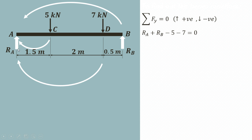RA and RB are acting in the upward direction so they are positive, whereas the 5 kN and 7 kN forces are acting in the downward direction so they are negative. Transferring the minus 5 and minus 7 to the other side they become positive, so 5 plus 7 equals 12 kN. This is equation number 1.